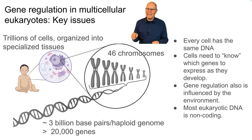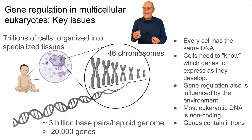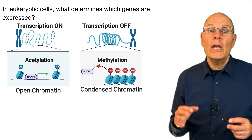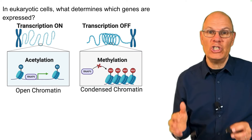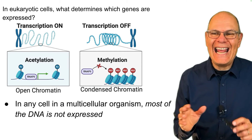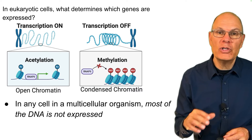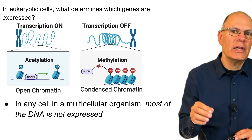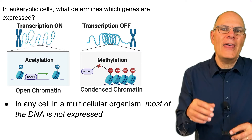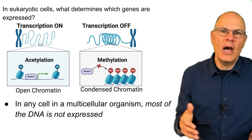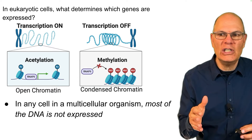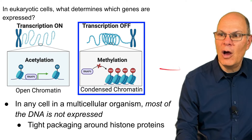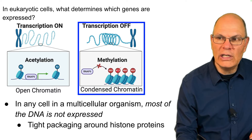Note that most eukaryotic DNA is non-coding — what's the difference between the coding DNA and the non-coding DNA? And genes contain introns, which we'll now look at in depth. In any cell in a multicellular organism, most of the DNA is not expressed. You have cells that make up the lens of your eye; those cells express a single protein. That means roughly 19,900 other proteins are not being expressed — all those genes are turned off.